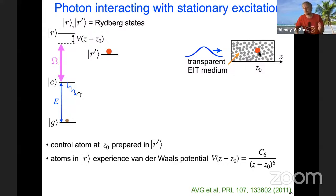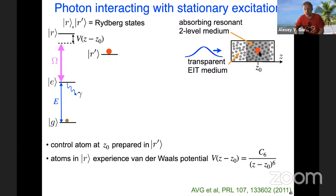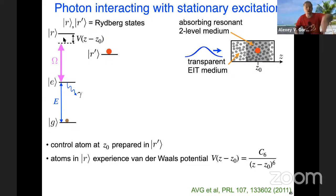As we introduce the atom in R prime, atoms in R experience a Van der Waals interaction with the atom in R prime. Since the R prime atom is fixed, it just gives a potential for atoms in state R that depends on the distance between the R atom at position Z and the R prime atom at position Z0. If it's far away, this potential is zero; if it's close, it's really this 1-over-R-to-the-6 and it's huge. So the energy of the R atom is now spatially dependent.